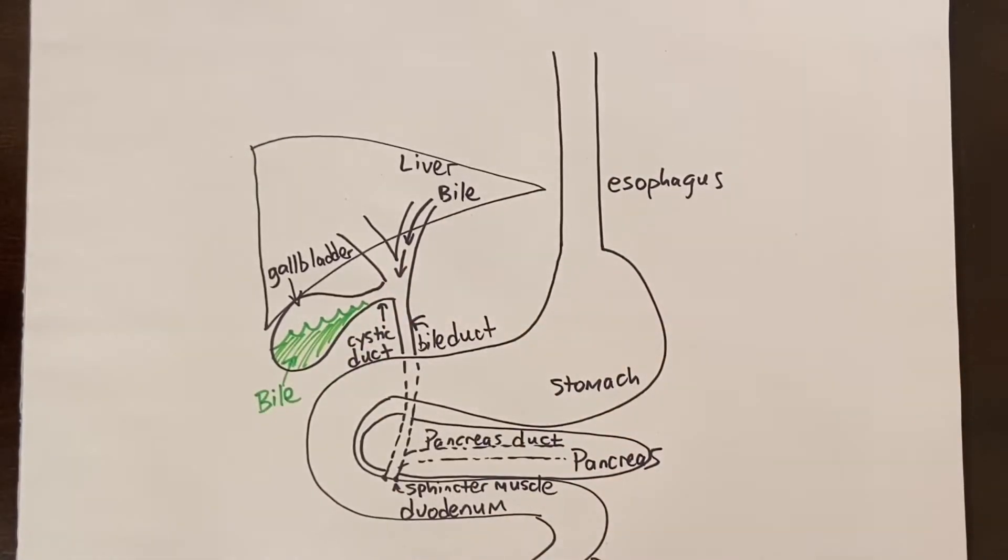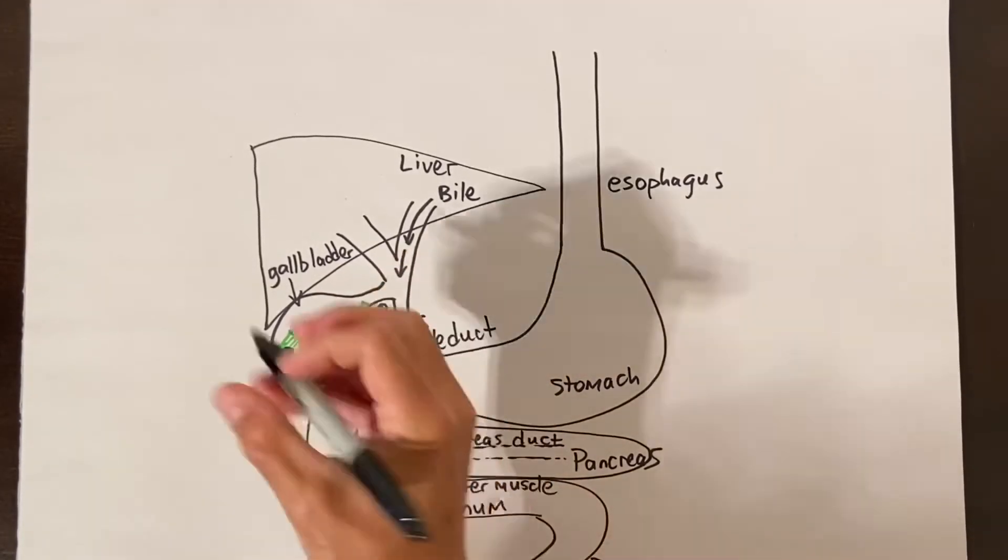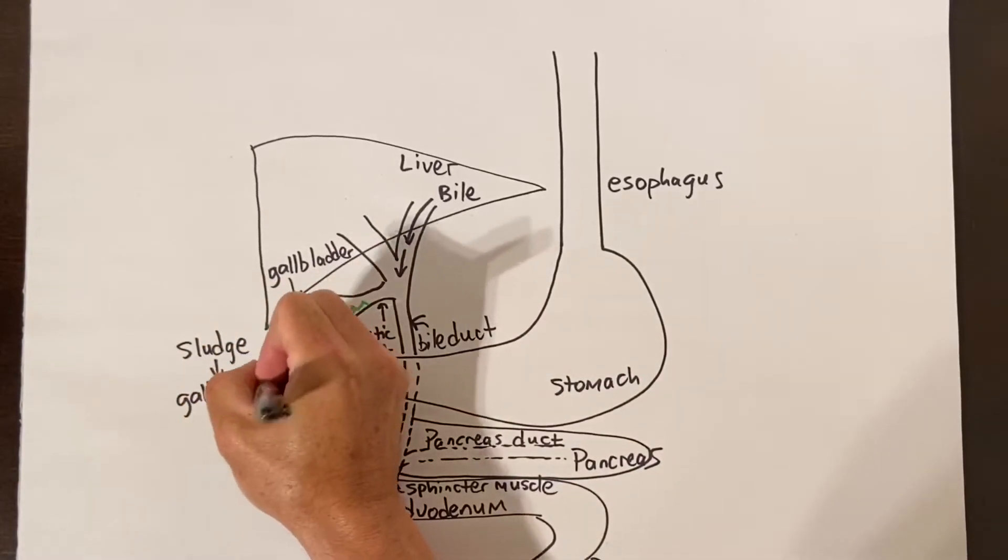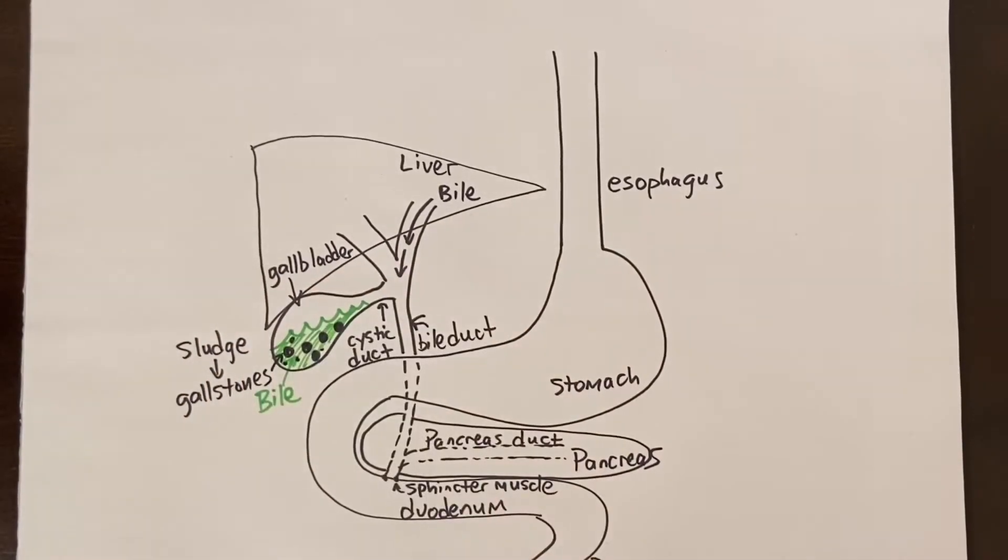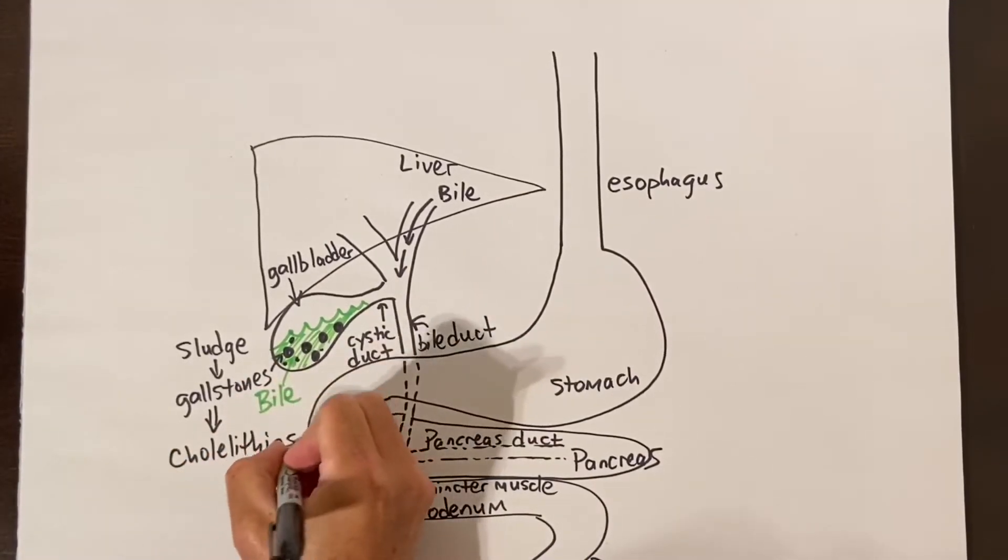Gallstones form in the bile as it sits in the gallbladder. This is from a combination of chemical imbalance in the bile itself and sometimes because the gallbladder is not squeezing properly. The gallstones usually start as a thick sludge then grow like pearls into more round individual stones over time.